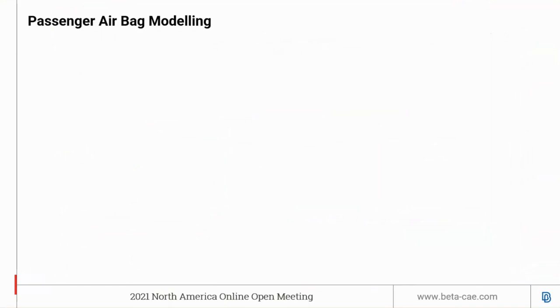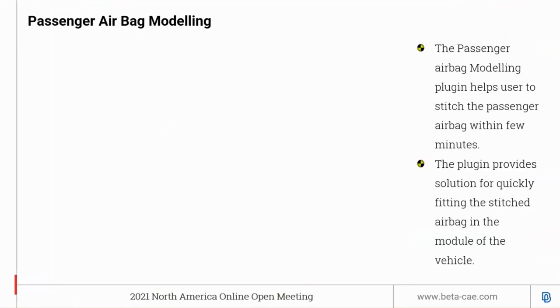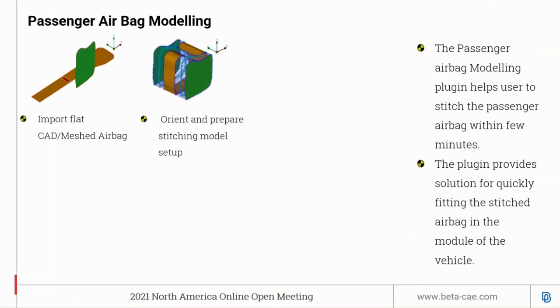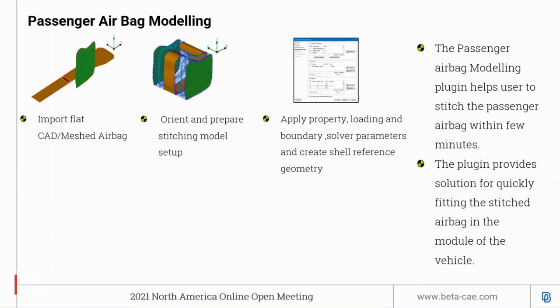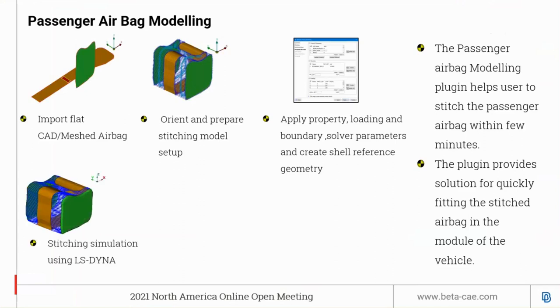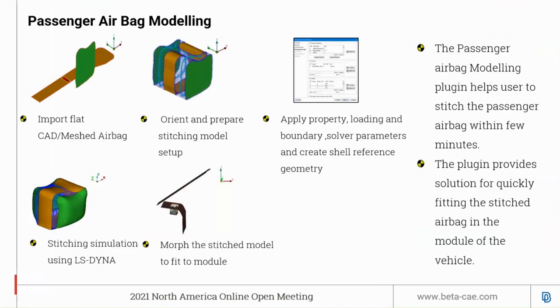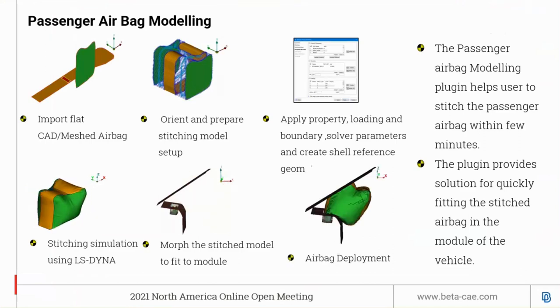Moving to the next topic: passenger airbag modeling. The PAD model helps the user switch and fit the bag in the model using the ANSA morph tool. The plugin is designed to first import the CAD, orient and prepare it, apply the boundary conditions and other required parameters to solve in LS-DYNA, import the solution from LS-DYNA, use the morphing tool to morph the bag into the module, and finally run a deployment test.